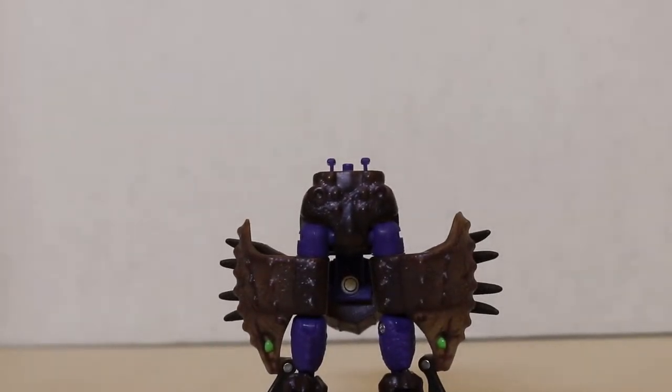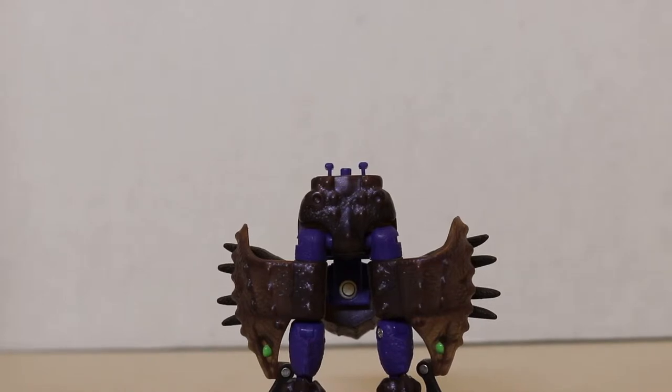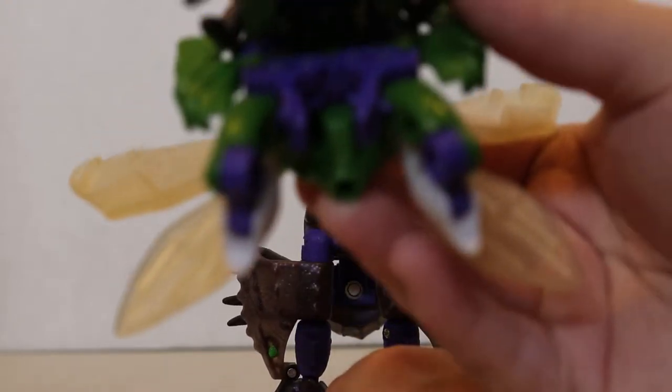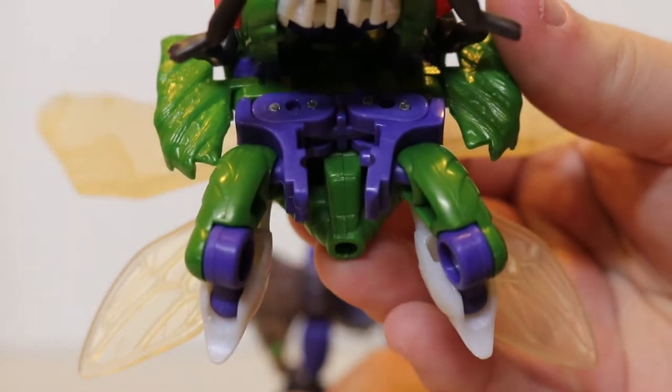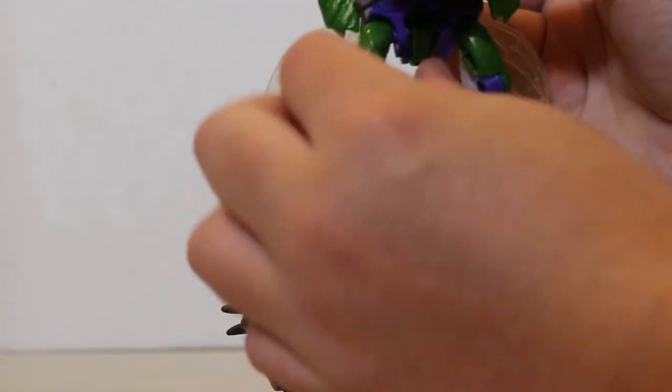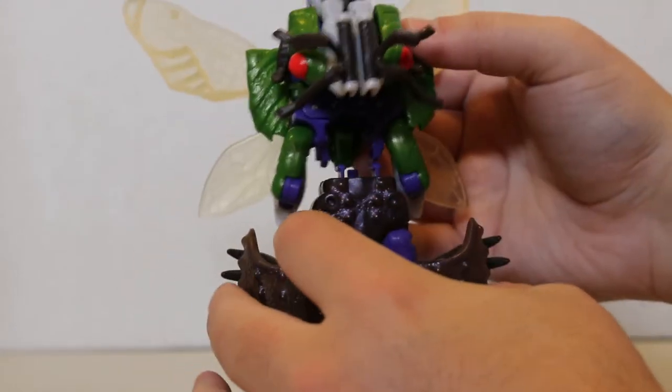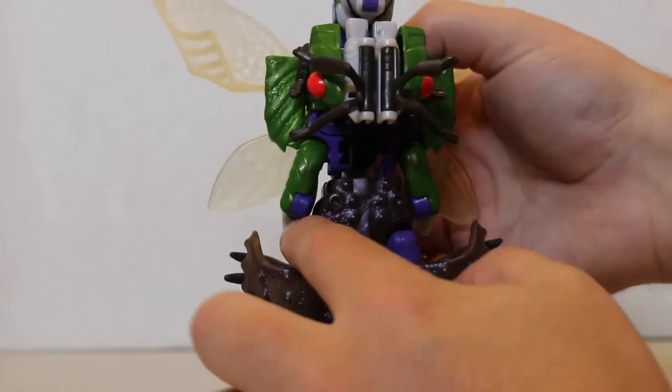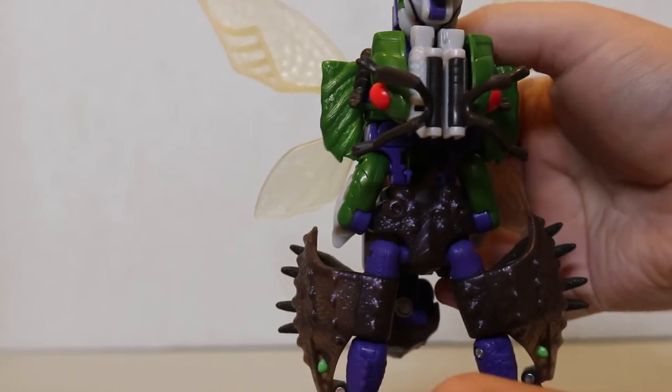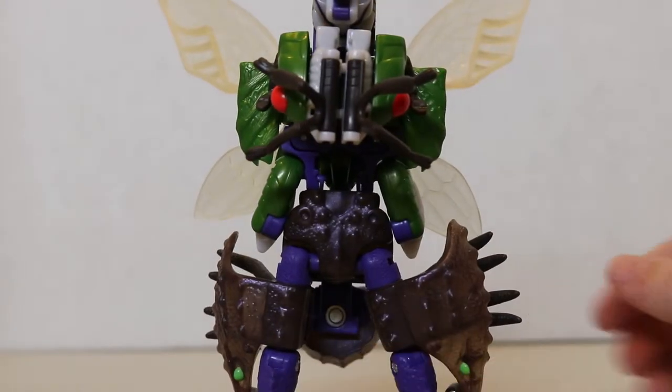Now to begin the combination sequence. We will connect Cicadacon with the ports here on Sea-Clamp. You can see what's going on here. There are tabs which interlock with these tabs here. We will then begin the docking. There we go. And boom. Torso and legs are now finished.